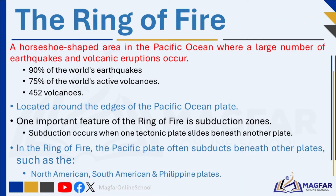The Ring of Fire is a horseshoe-shaped area in the Pacific Ocean where a large number of earthquakes and volcanic eruptions occur. It's called the Ring of Fire because it's shaped like a ring and has a lot of fiery volcanic activity. It is home to 90 percent of the world's earthquakes and 75 percent of the world's active volcanoes.